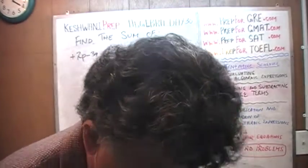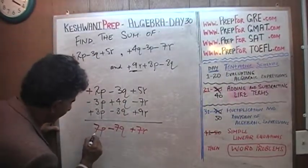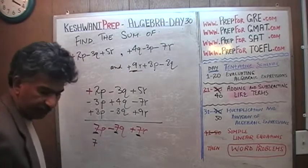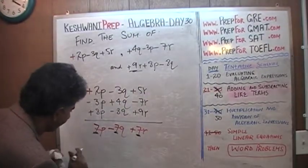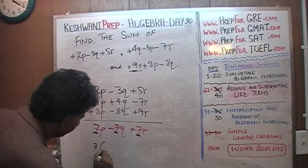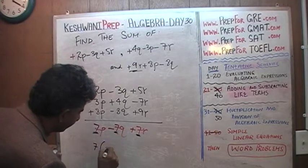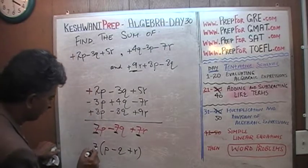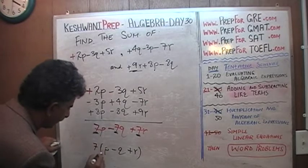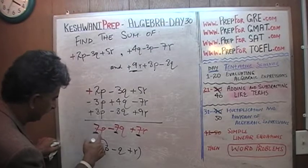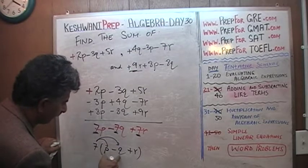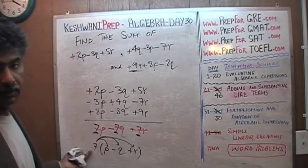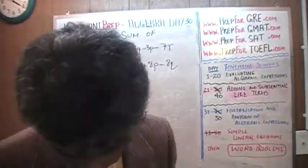It's just a fluke that they all have the same coefficient 7, but while we're at it, let's learn something: we can factor out 7 as common. If we take out 7, we're left with p minus q plus r inside the parenthesis. Notice that if you open the parenthesis you get 7p minus 7q plus 7r — exactly what we had. So you can leave the answer as 7p minus 7q plus 7r, or write it as 7(p minus q plus r). Either way is fine.